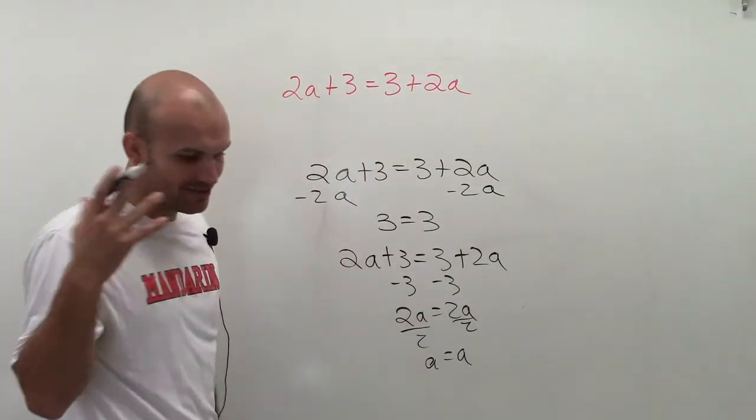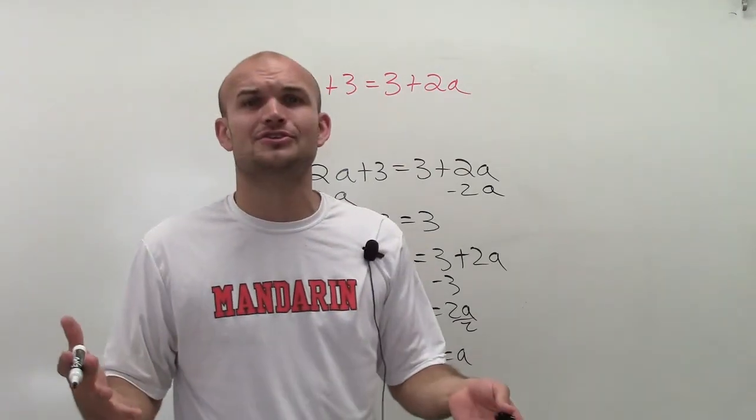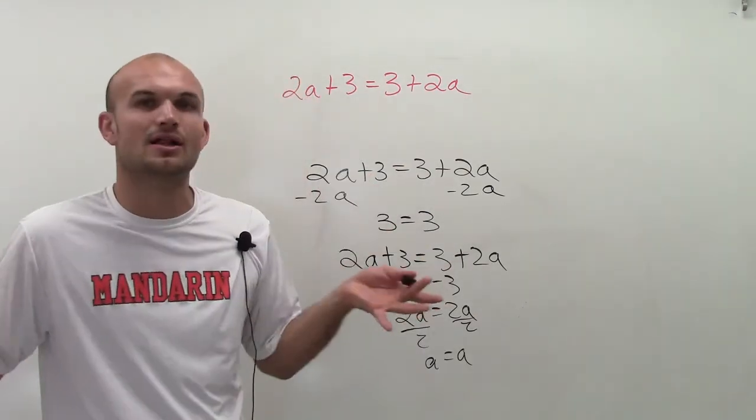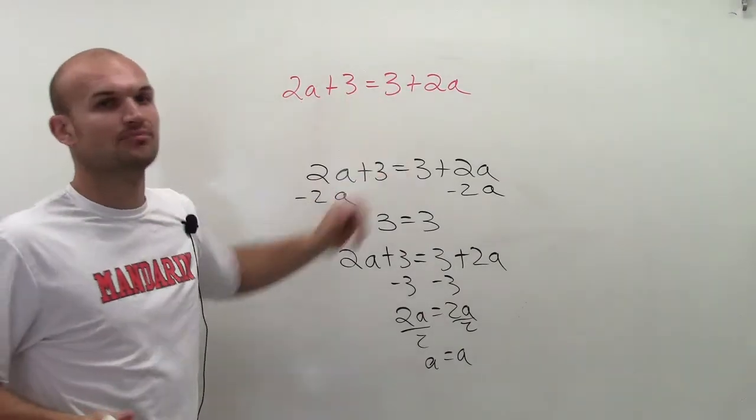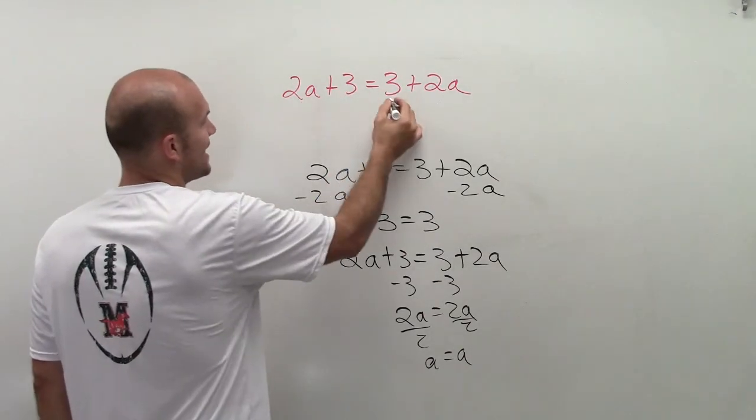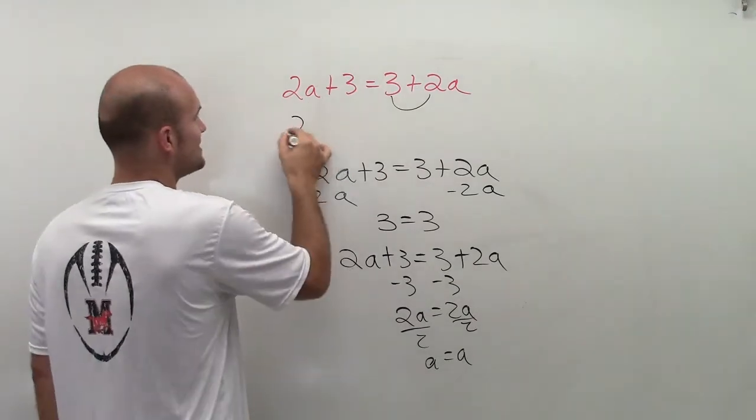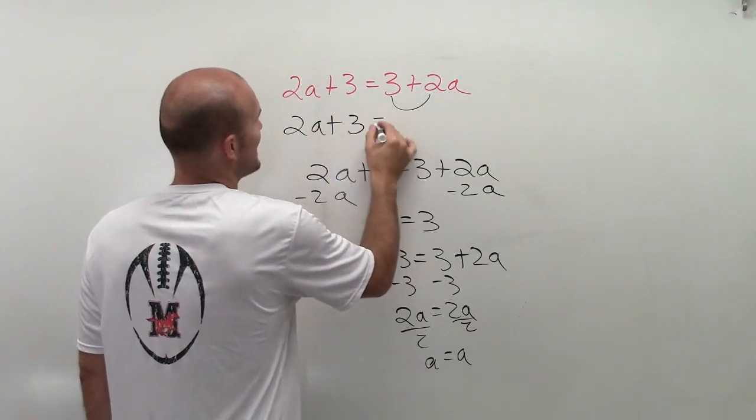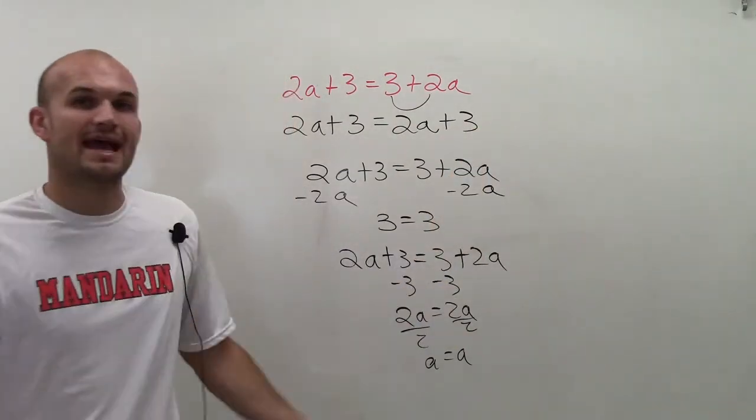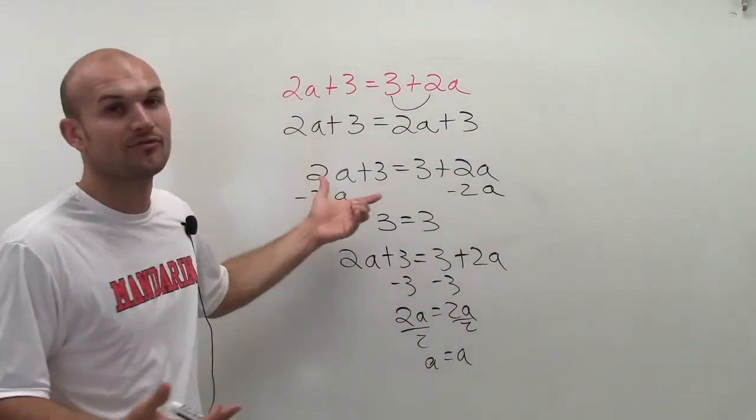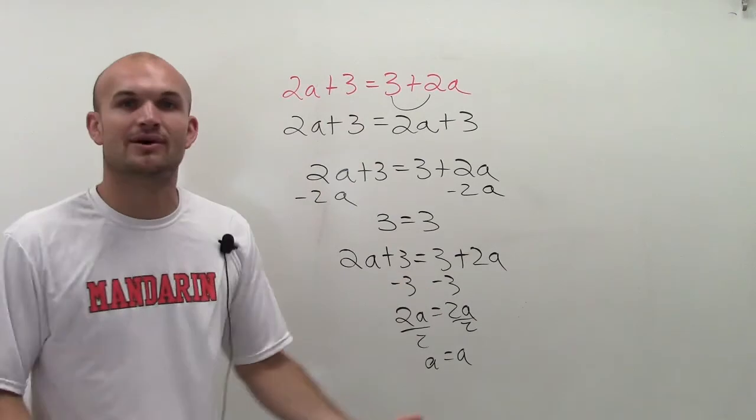The other way you can look at this and realize - rather than doing all this work, how could I tell it's exactly the same? You can just look at this by using the commutative property of addition. You can see that I can rearrange these and see that these equations are exactly the same. So no matter what my value of a is, whatever number I plug in for it, it's going to give me the exact value on the other side.